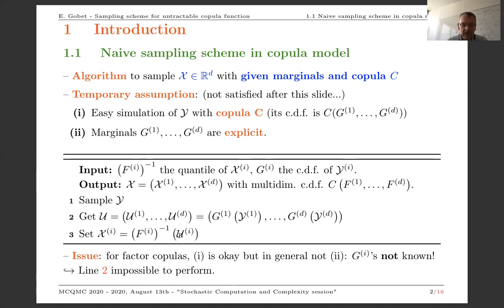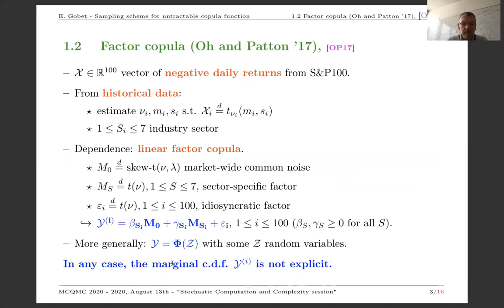Of course, this algorithm is very basic and requires knowledge of the G_i, and we are in a situation where sometimes the G_i's are not known. This is typically the case in a factor copula model. A factor copula model is typically developed by Oh and Patton (2017) and is used to model the daily returns of the S&P 100.